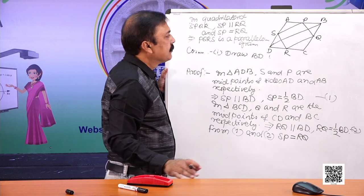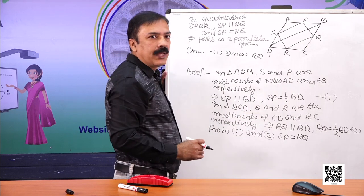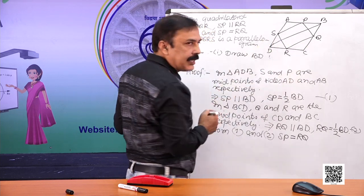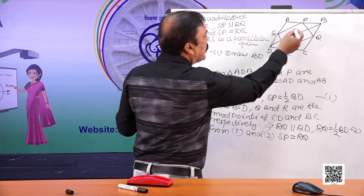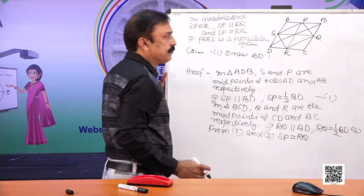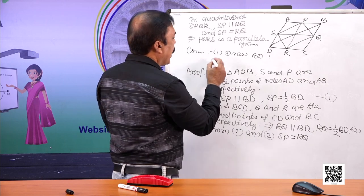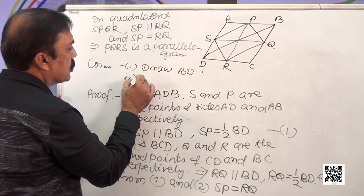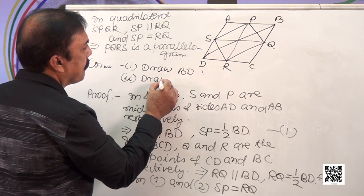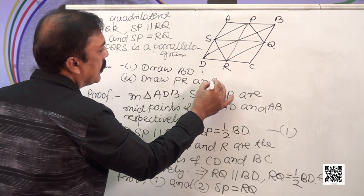Now the second part: to prove this parallelogram is a rectangle, we have to show that each angle is 90 degrees, or equivalently that the diagonals PR and SQ are equal. Let's try with the diagonals. The second construction is to draw line segments PR and SQ.